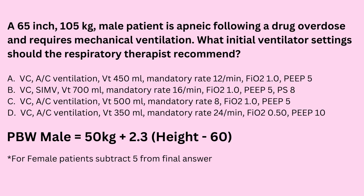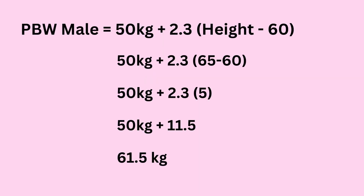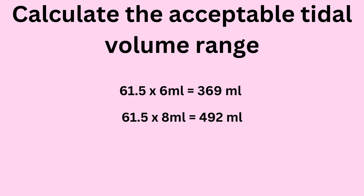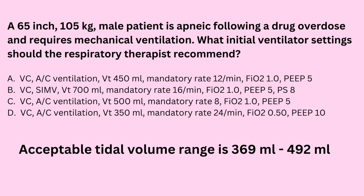We're going to calculate the patient's predicted body weight. The formula we prefer for males is: 50 kilograms plus 2.3 times (height in inches minus 60). Working through the equation: 65 minus 60 equals 5; 2.3 times 5 equals 11.5; 11.5 plus 50 gives a predicted body weight of 61.5 kilograms. Multiplying 61.5 by 6 and by 8 gives a tidal volume range of 369 to 492 mLs.